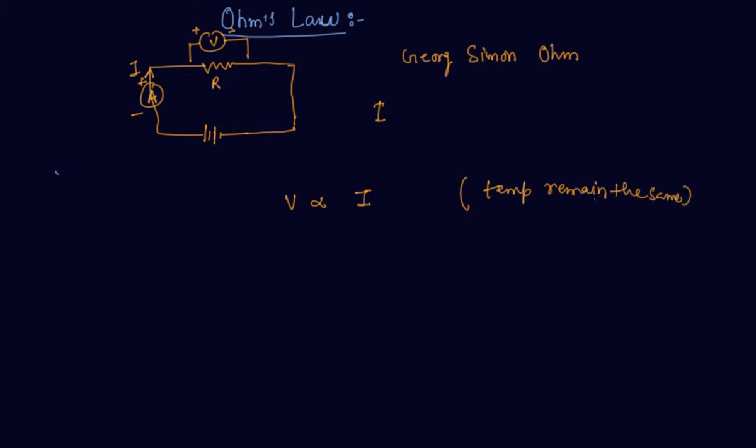This is called Ohm's law, in which when we remove the proportionality constant there is a constant named resistance. So this is Ohm's law: V equals IR, and R is a constant for the given metallic wire and it is called resistance.